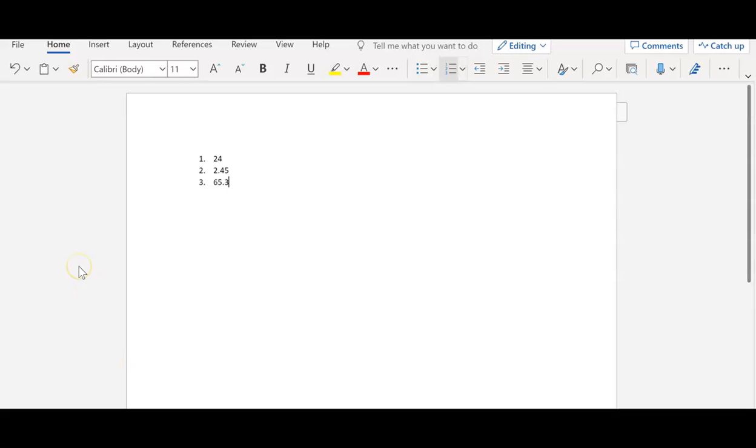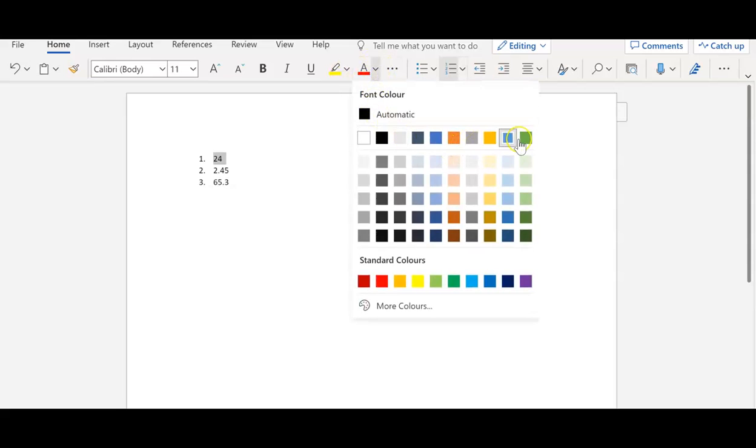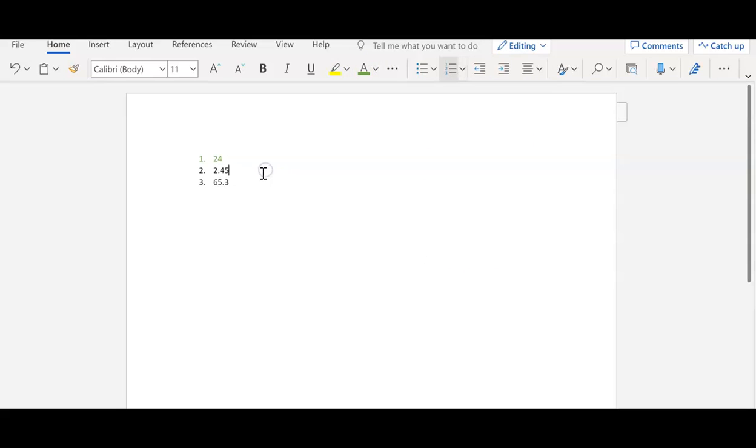Okay, when you've finished you can pull out the answer sheet and then you can mark your questions by changing the font color or highlighting them. So if 24 is correct, I can highlight my number, I can go up here to where the color font is and I can change it to green to show it's correct. If I've got it wrong I can highlight my number, go up here and change it red to show that I've got it wrong.